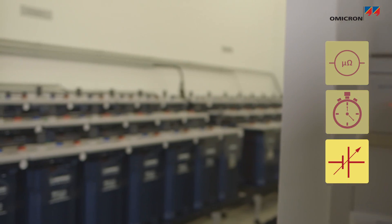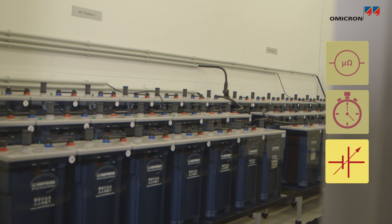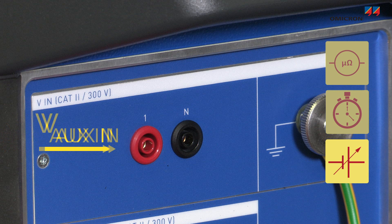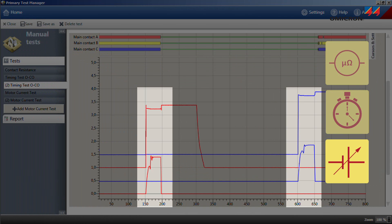Alternatively, the station DC supply can also be routed through the Sabano to issue the trip and close commands. The coil currents and voltages are also recorded in this setup.